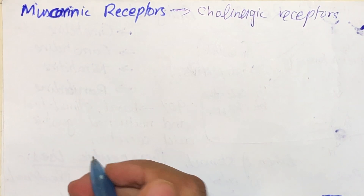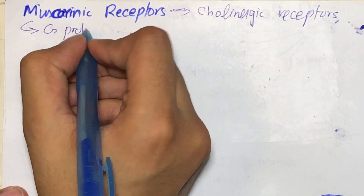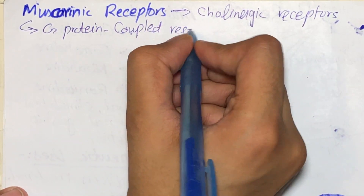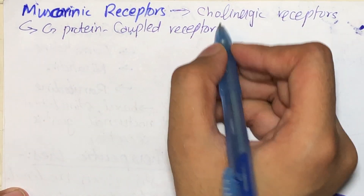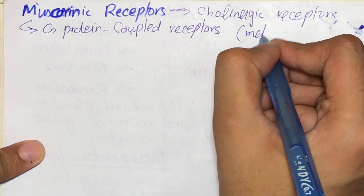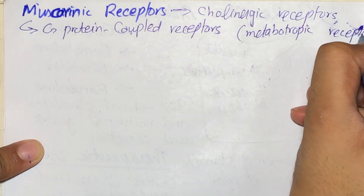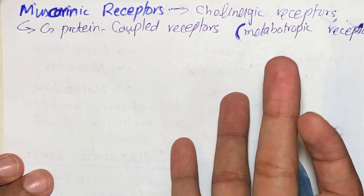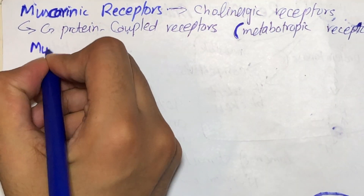Muscarinic receptors actually belong to a class of receptors which are G-protein coupled. We have already learned about G-protein coupled receptors and how they work — you can find a video about that on my channel. These kinds of receptors are also called metabotropic receptors. In addition to acetylcholine, these receptors also recognize an alkaloid called muscarine.